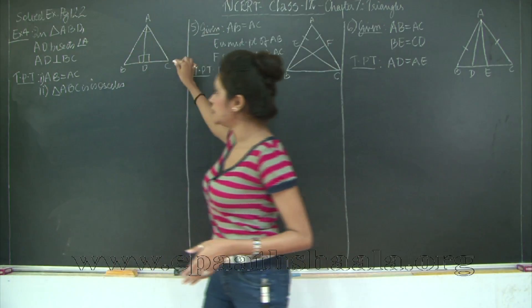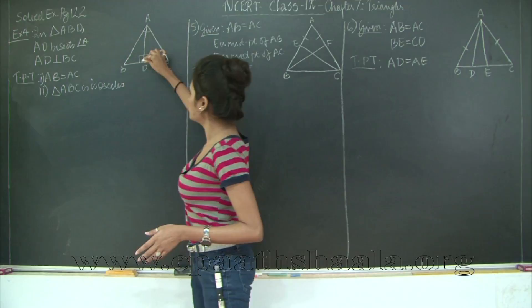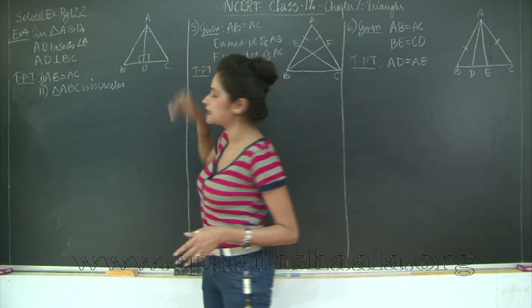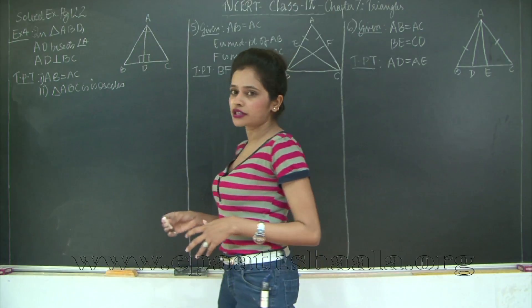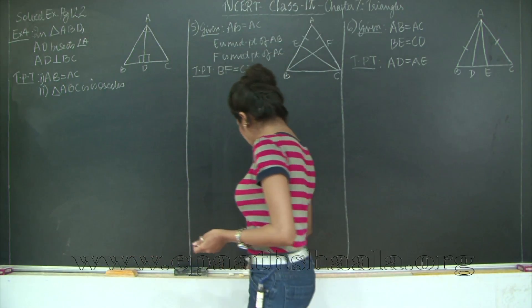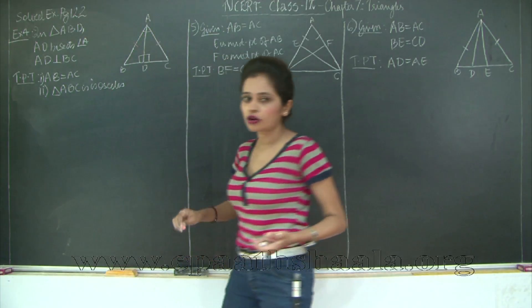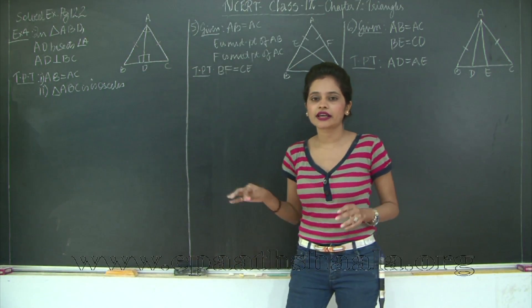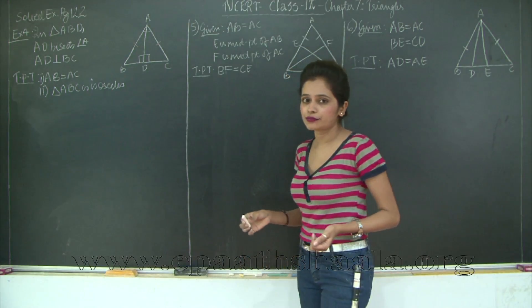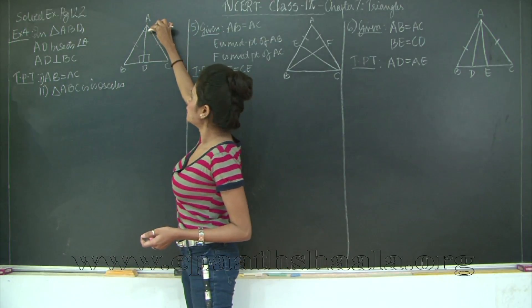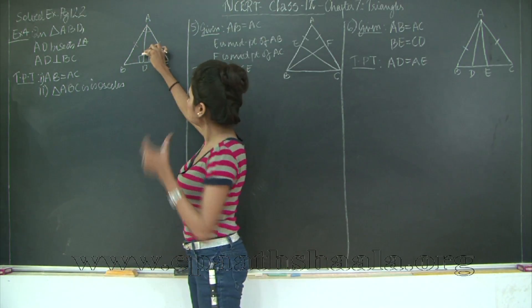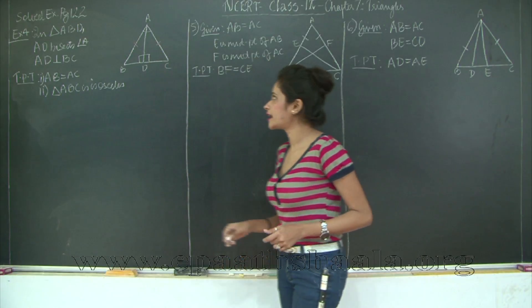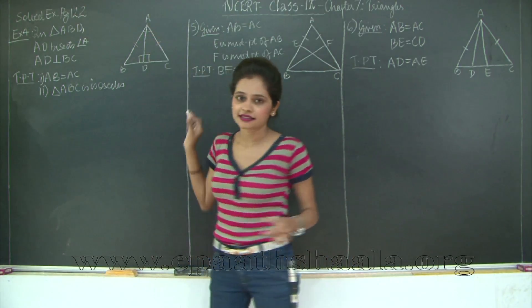In triangle ABD, AD bisects angle A, so angle BAD is equal to angle CAD. Also AD is perpendicular to BC, therefore angles ADB and ADC are each 90 degrees. You need to prove two things: that AB is equal to AC, and that triangle ABC is isosceles. Once you prove two sides of a triangle are equal, the triangle is isosceles. You have equal angles, a common side, and right angles — so the two triangles are congruent by the angle-side-angle test.